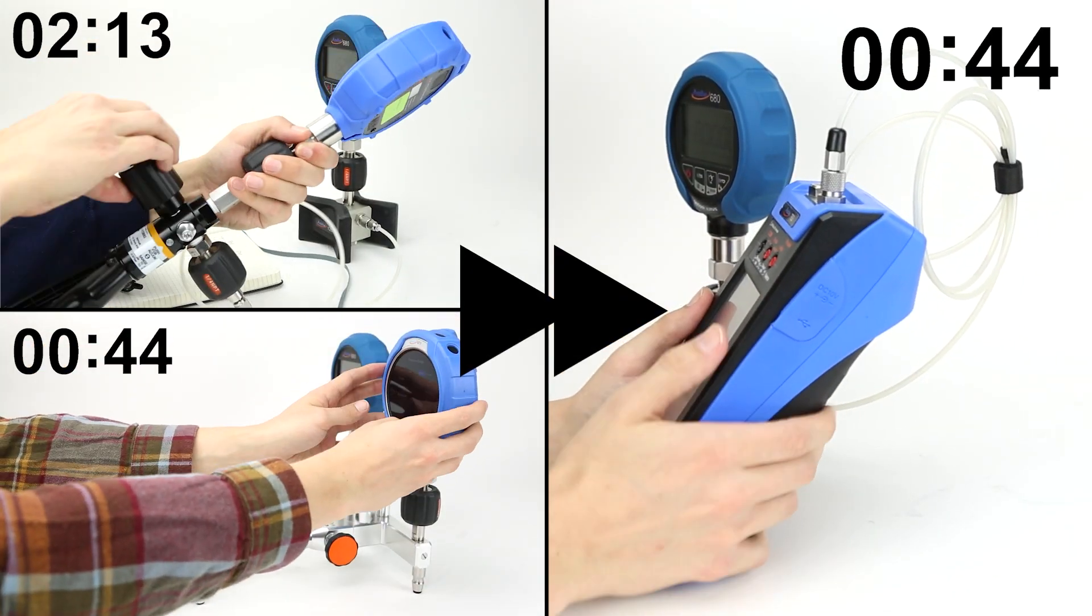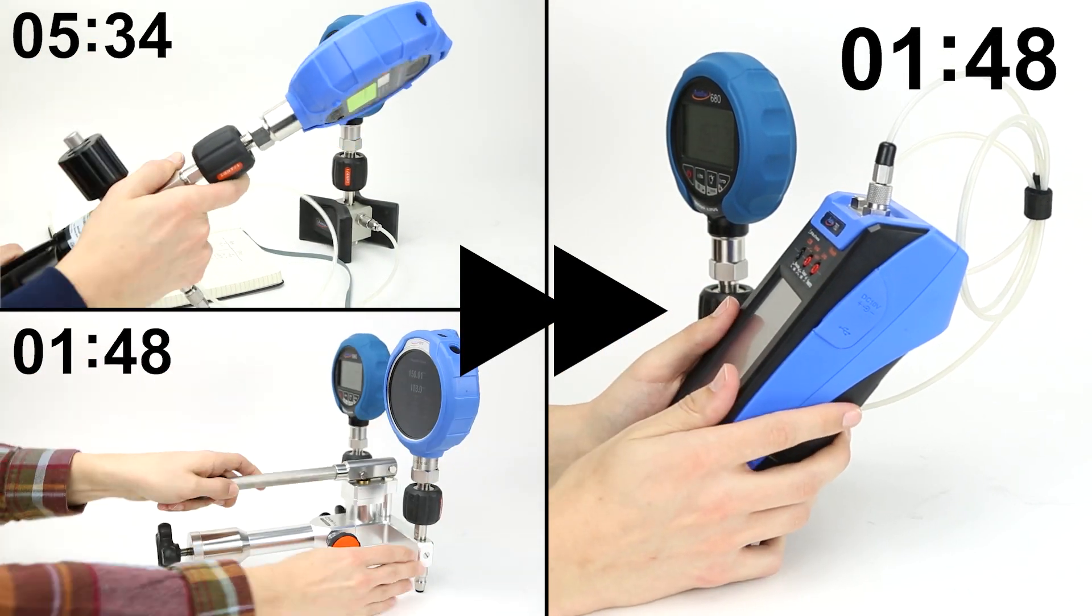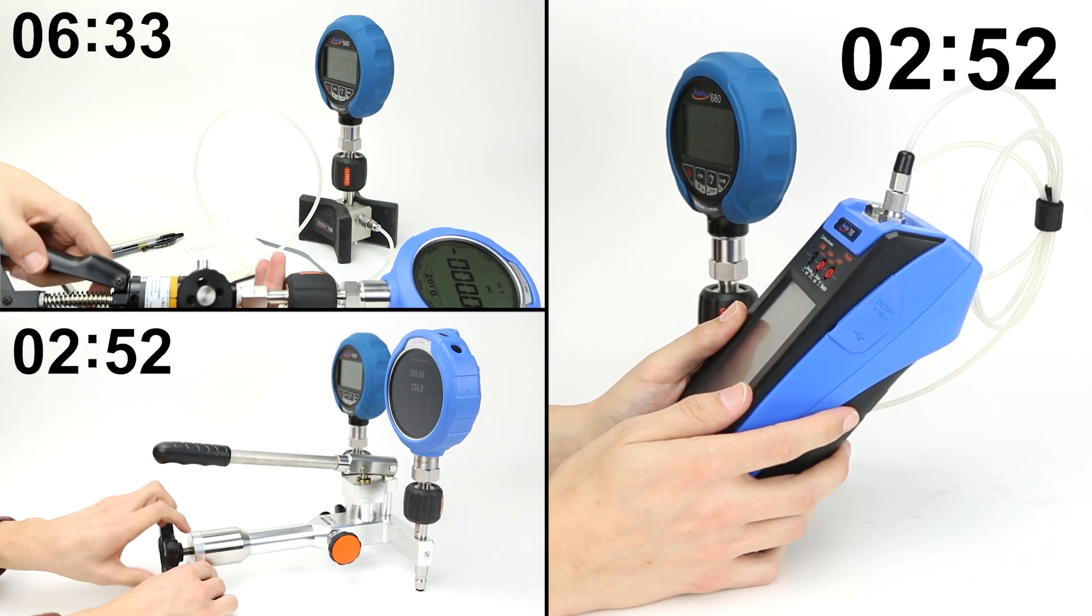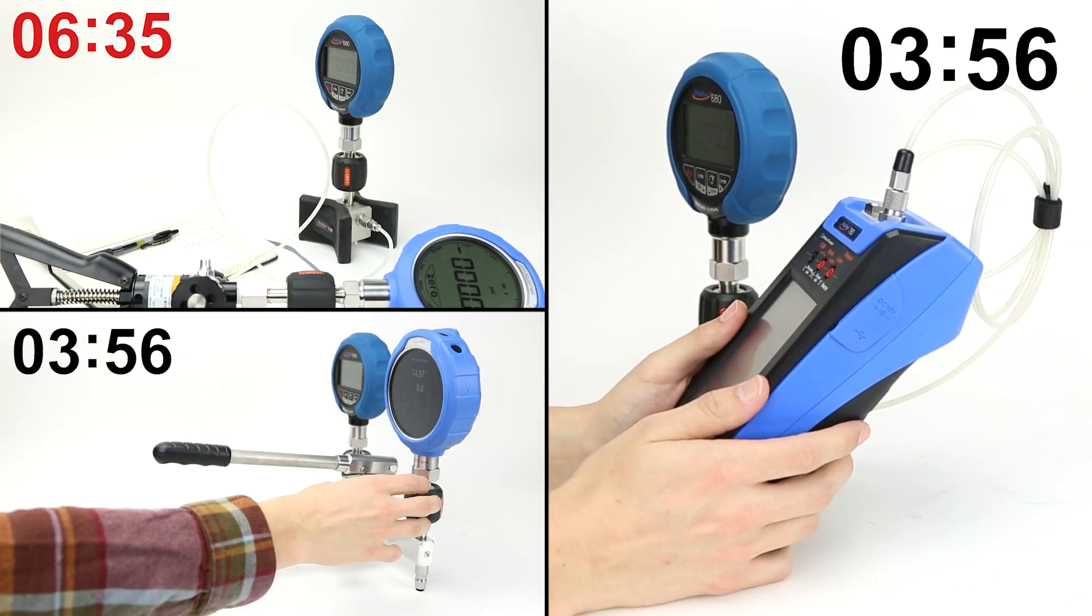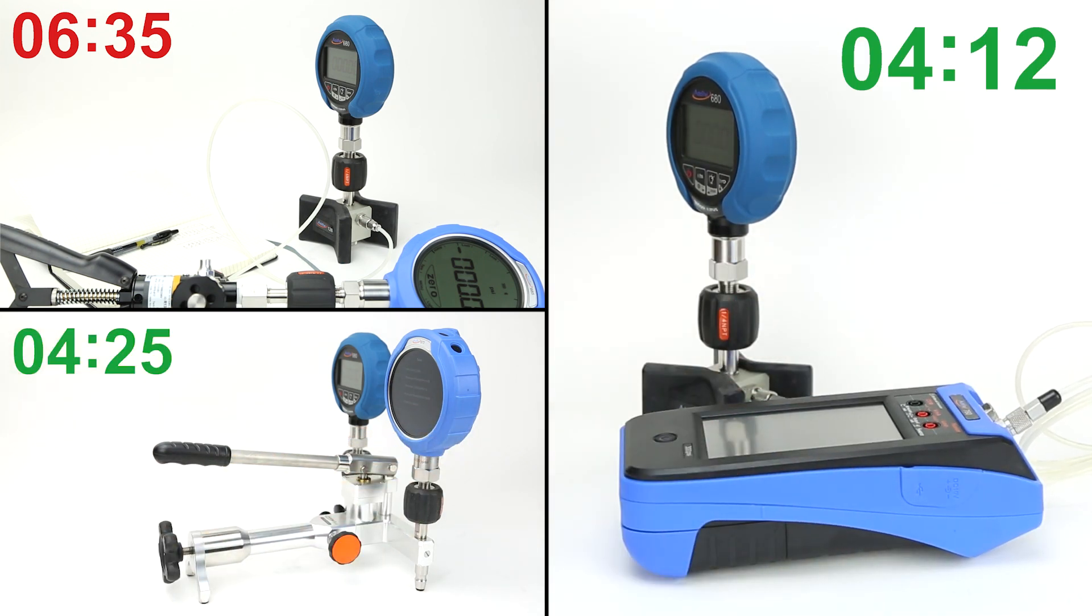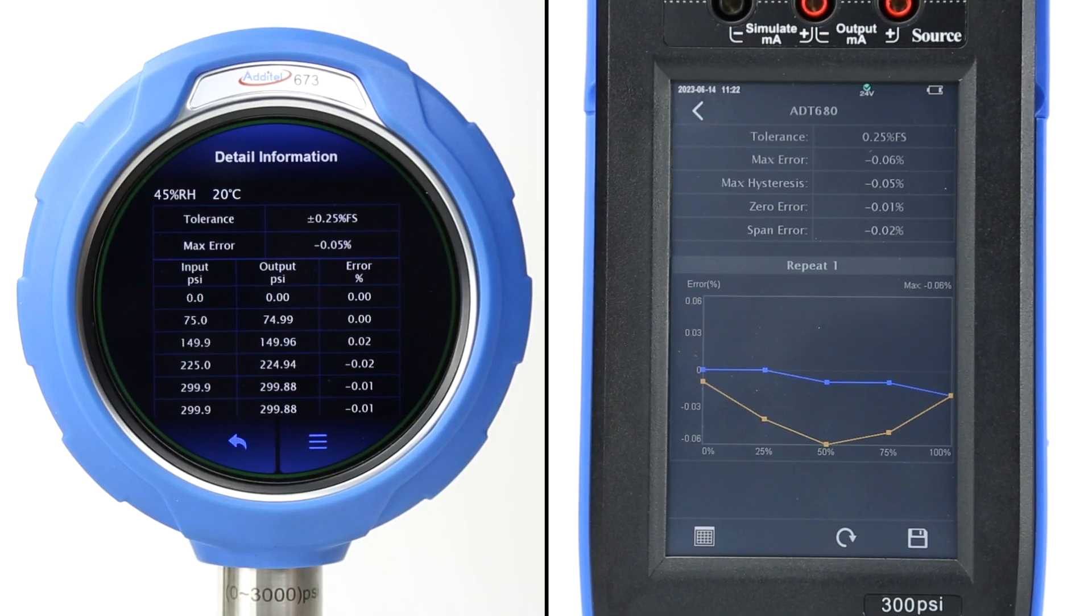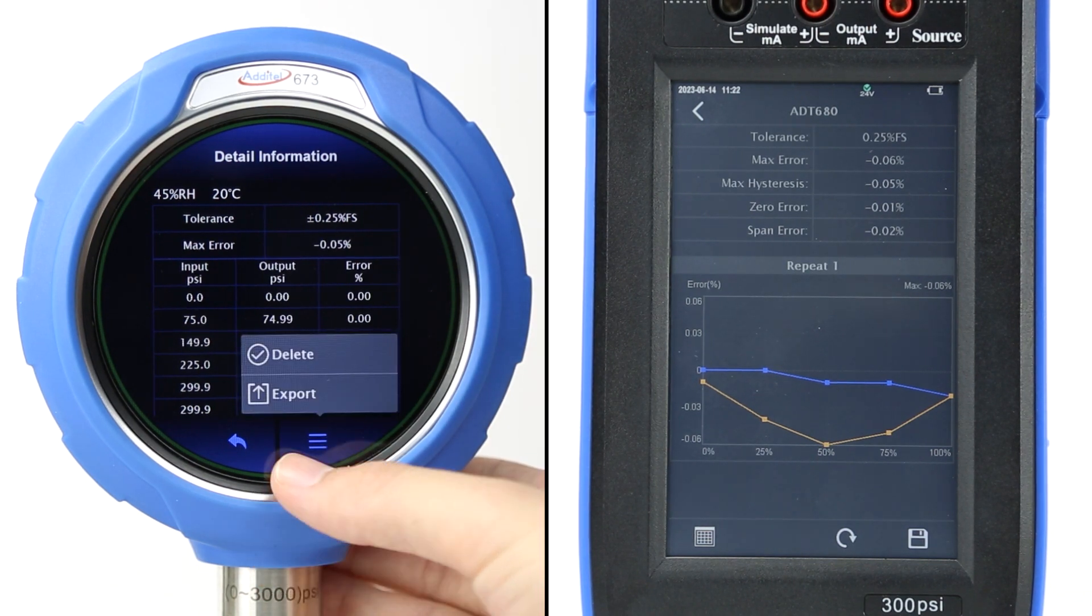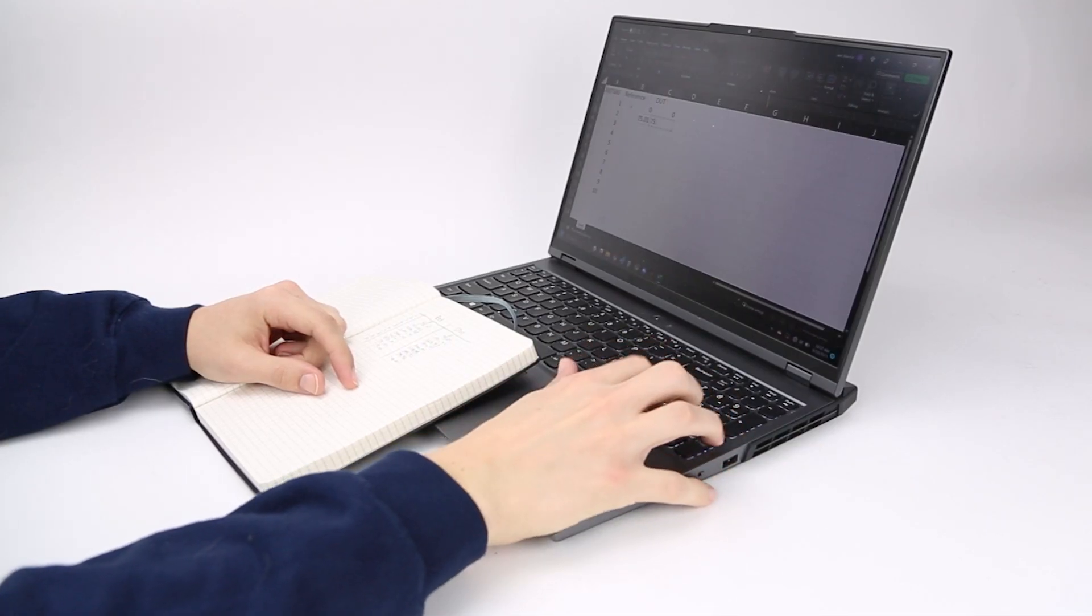If we fast forward the testing procedures, we can see that for a 9-point round trip test, Technician 1 took over 6 and a half minutes, while Technicians 2 and 3 only took 4 and a half minutes, from setup to finish. Technicians 2 and 3 also have their calibration data ready to view or export immediately, while Technician 1 still has to enter all of their data manually into their lab software.